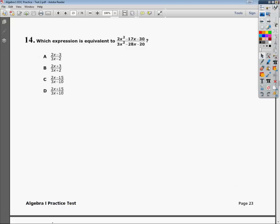This is the Tennessee Algebra 1 practice test, intercourse practice test number 2. Question number 14. The question says, which expression is equivalent to 2x squared minus 17x minus 30 over 3x squared minus 28x minus 20?